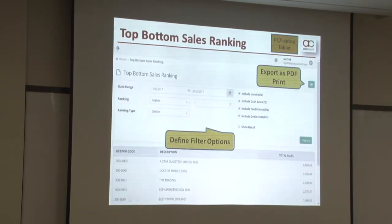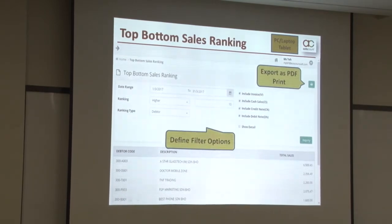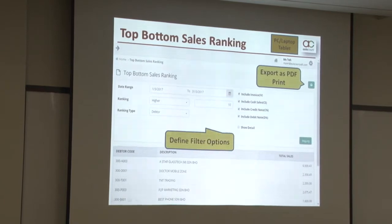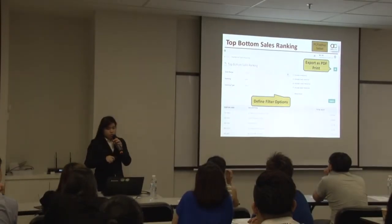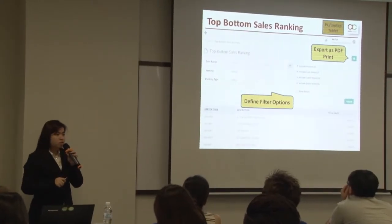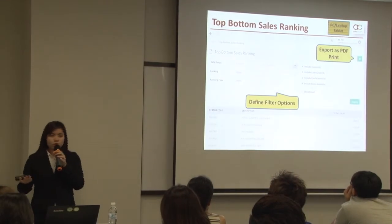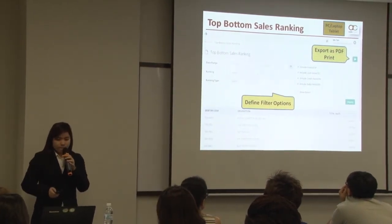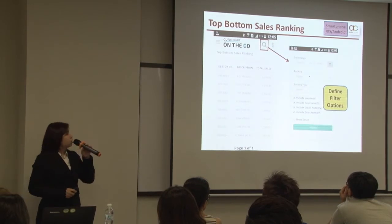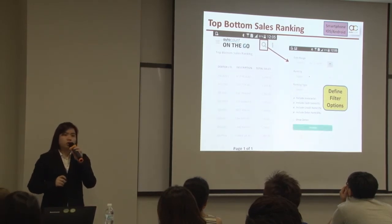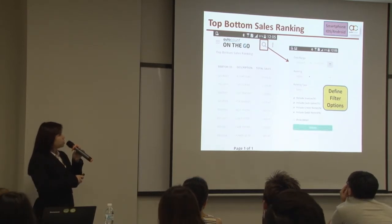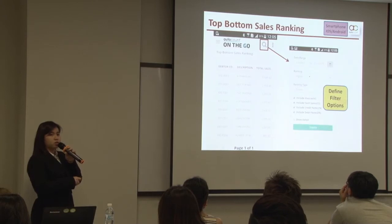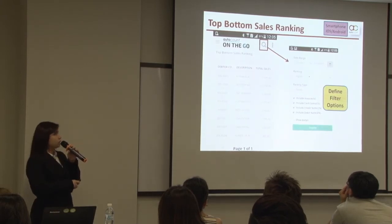Here is a capture of one of the sales reports — the Top/Bottom Sales Ranking Report. If you are using a PC, laptop, or tablet, you will get the full layout of the sales reports. As usual, you may define the filter options and export or directly print out the sales report. On smartphone, there is a search icon — you may touch on it to get the filter options.